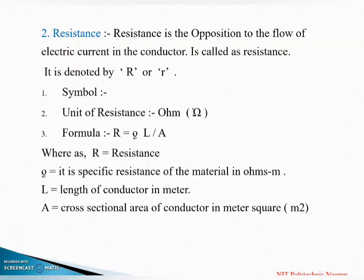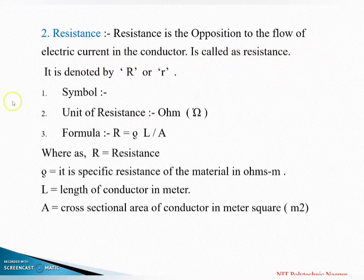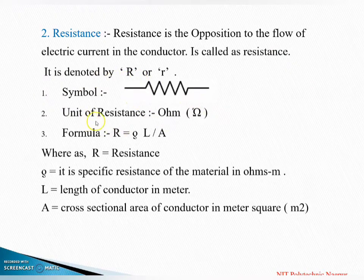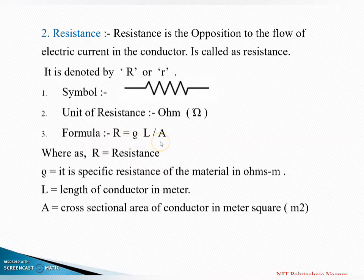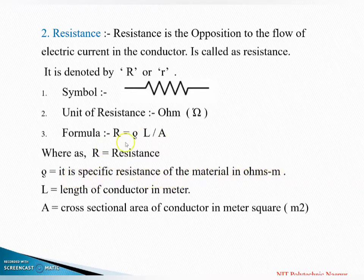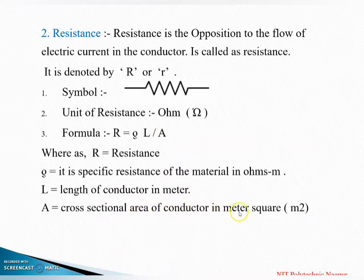The resistance is the opposition to the flow of electric current in a conductor, called as resistance. It is denoted by R, unit is ohm, and the formula is R = ρL / A, where ρ is the specific resistance of the material in ohm-meters, L is the length of the conductor in meters, and A is the cross-sectional area in meter square.